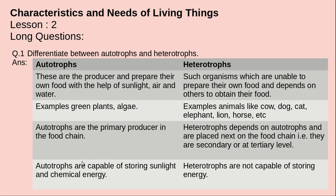Autotrophs are capable of storing sunlight and chemical energy. These are some differences between autotrophs and heterotrophs: autotrophs can make their own food while heterotrophs cannot make their own food — they depend on others for their food.